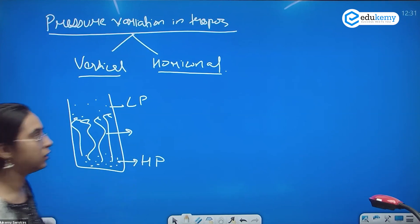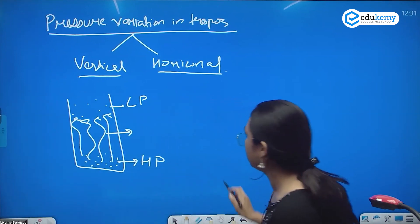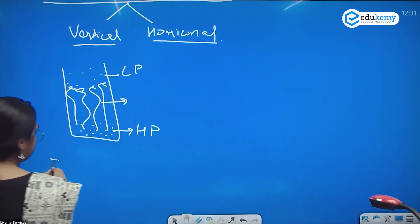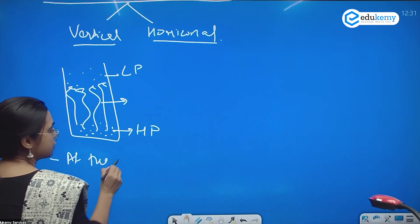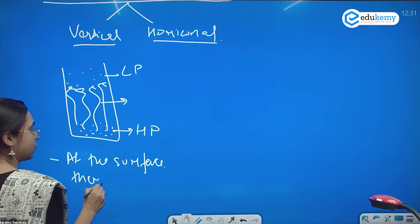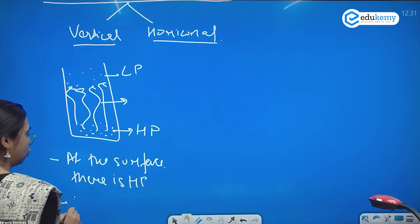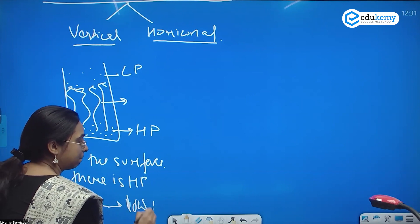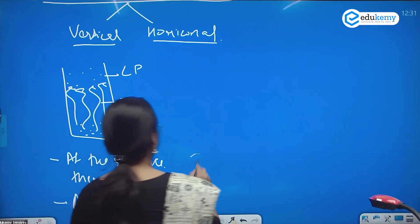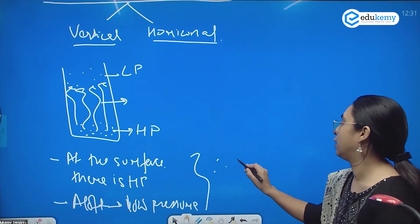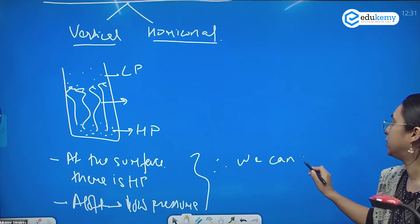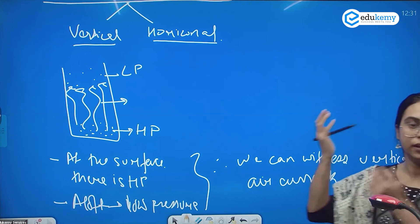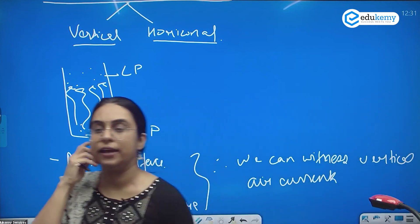To elaborate on vertical pressure variation: at the surface there is high pressure, and aloft we have low pressure. Therefore, we can witness vertical air currents.